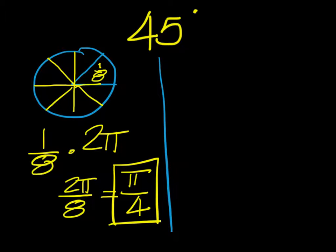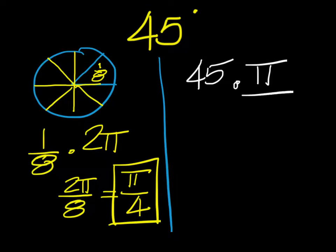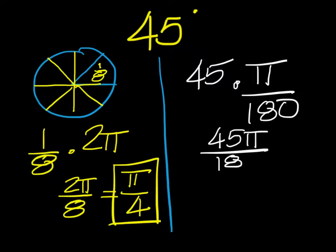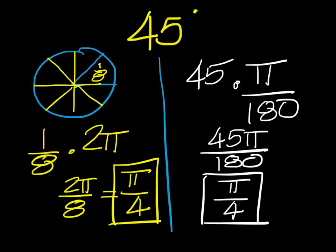The other way: we start with 45 degrees. To convert any degree measurement into radians, you can multiply those degrees by π over 180. Doing that gives 45π over 180. Can I reduce 45 over 180? It reduces down to π over 4. So we get the same answer regardless of which method we use.